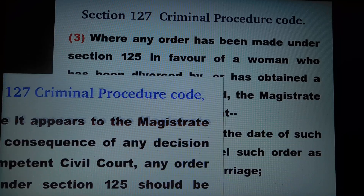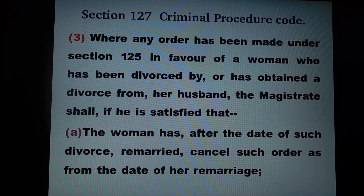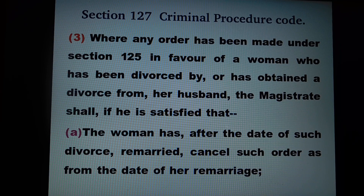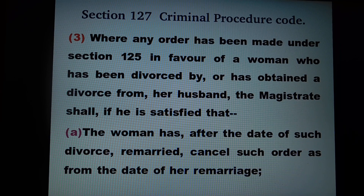As per subsection 3 of section 127, where any order has been made under section 125 in favour of a woman who has been divorced by or has obtained a divorce from her husband, the magistrate shall, if he is satisfied that the woman has, after the date of such divorce, remarried, cancel such order as from the date of her remarriage.